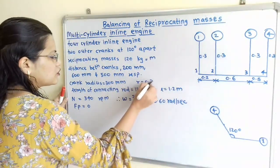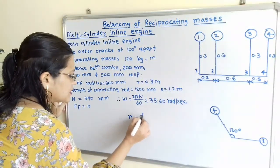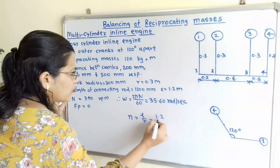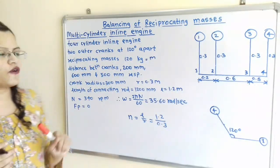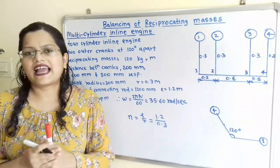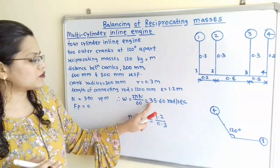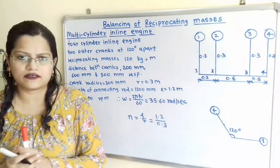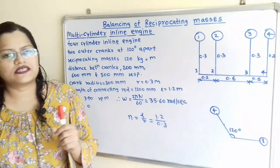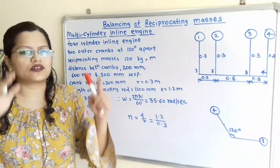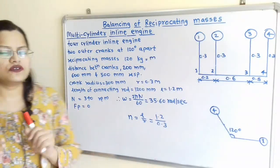The crank radius R is 0.3 m. From this we can calculate the obligatory ratio N, which equals L divided by R, that is 1.2 divided by 0.3, giving N equal to 4. The crank speed is 340 RPM, and from this we calculate omega as 2πN/60, which equals 35.60 radians per second. It is also given that the primary forces are balanced, so the primary force polygon must be closed, meaning Fp equals zero.